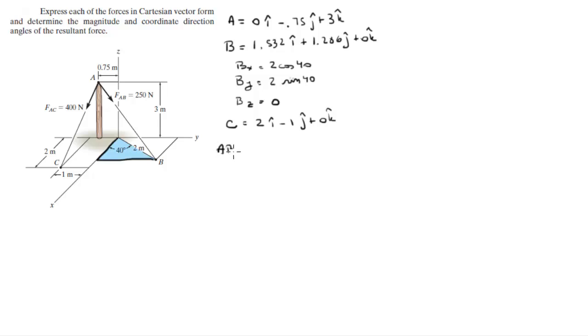So AB is equal to Bx minus Ax in the i, plus By minus Ay in the j, plus Bz minus Az in the k. When you plug the numbers in from these two vectors,